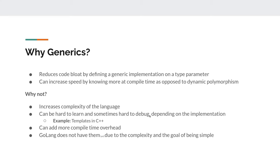Why would you not want to use generics? They can increase the complexity of the language — this is why Golang didn't choose to have them initially, because they wanted to be a simple and easy language. It can be hard to learn and sometimes hard to debug depending on how they're implemented. For example, the template implementation in C++ is extremely complicated — it is in fact a fully functional programming language in its own right and you can do everything there, but it's incredibly hard to debug. They can also add more compile time overhead, since the compiler has to generate all the functions, and that takes time.